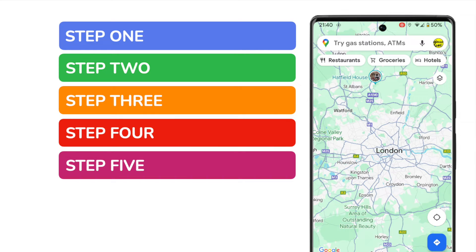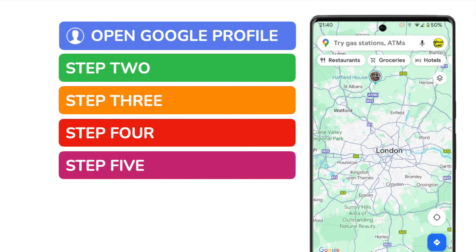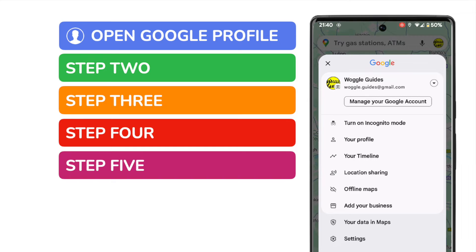I know that sounds like a lot, but I promise you we'll be done in less than two minutes. To add any new information to Google Maps we need to start by opening the Google profile information in the app. This can be found by tapping the icon in the top right of the app, shown within the search bar.